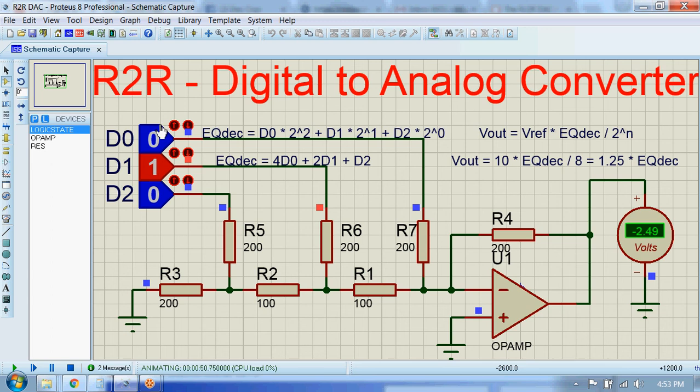We can see for other binary inputs as well. For 011 it should display around 3.75 volts. And now for 100, for 110, and finally for 111.